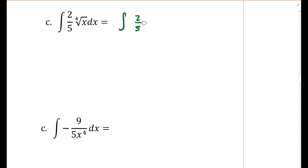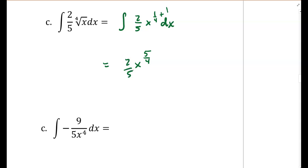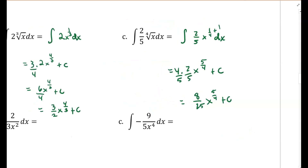Here is the solution to part C. The first thing you should have done is rewrite this as x to the power of one fourth. When you integrate, you raise the power by 1 — adding 1 to one fourth gives 4 over 4, so that's x to the power of 5 fourths. Then divide by 5 fourths, which means multiplying by 4 fifths. So we should get 8 twenty-fifths x to the power of 5 fourths plus a constant.